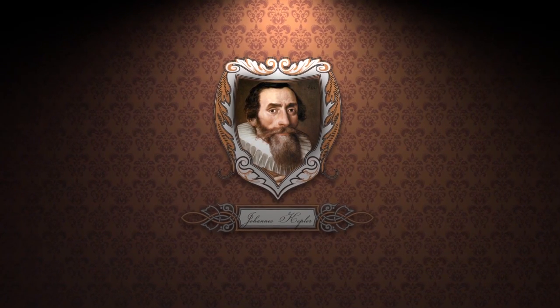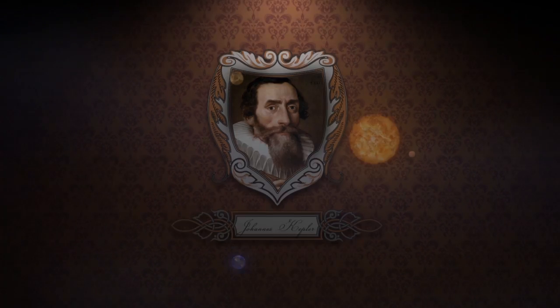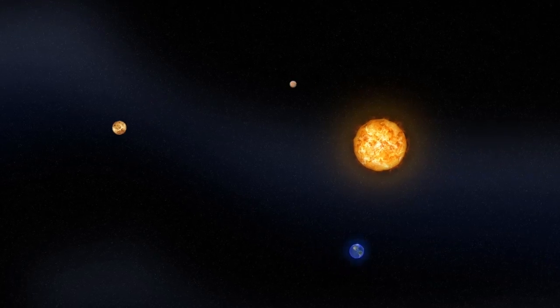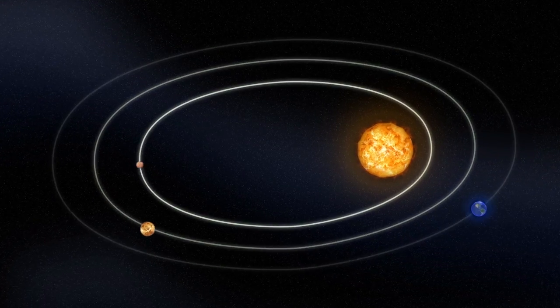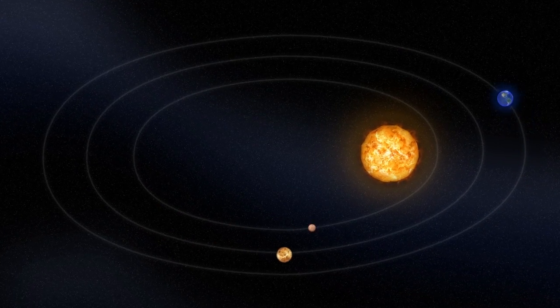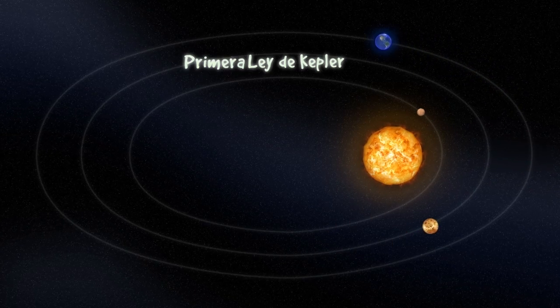El astrónomo alemán Johannes Kepler descubrió que todos los planetas se mueven en órbitas elípticas, con el sol en uno de sus focos. Lo que se conoce como la primera ley de Kepler.